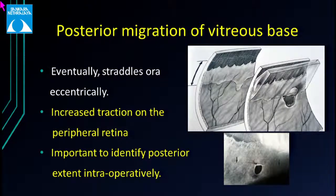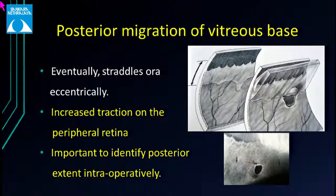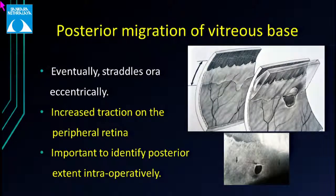The posterior migration is irregular, straddling the ora serrata — more posteriorly migrated in some areas, less in others. The clinical importance is in the pathogenesis of horseshoe-shaped tears: as PVD evolves and reaches the posterior vitreous base, the PVD continues but this area of strong attachment tears off, causing a horseshoe-shaped tear. Intraoperatively, it is important to identify the posterior extent of the vitreous base, because beyond this we should start shaving the vitreous and not be too aggressive.